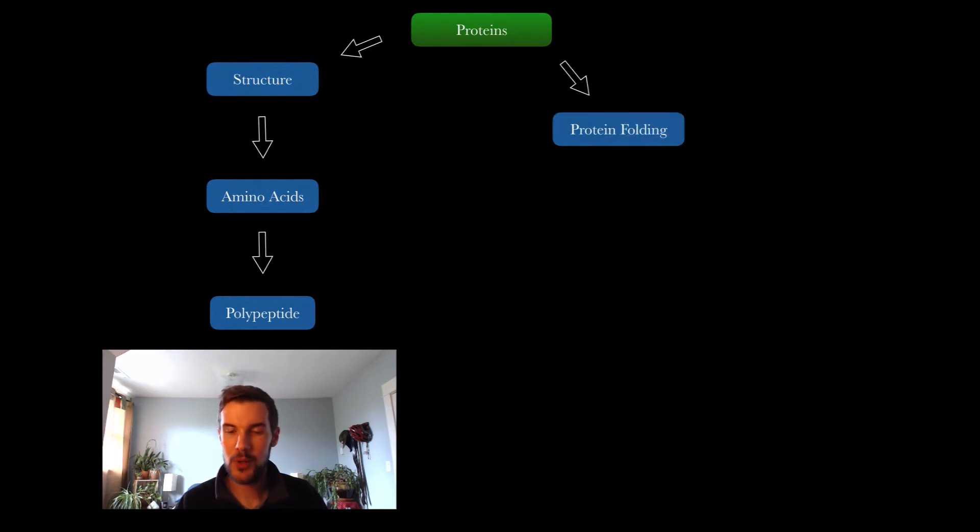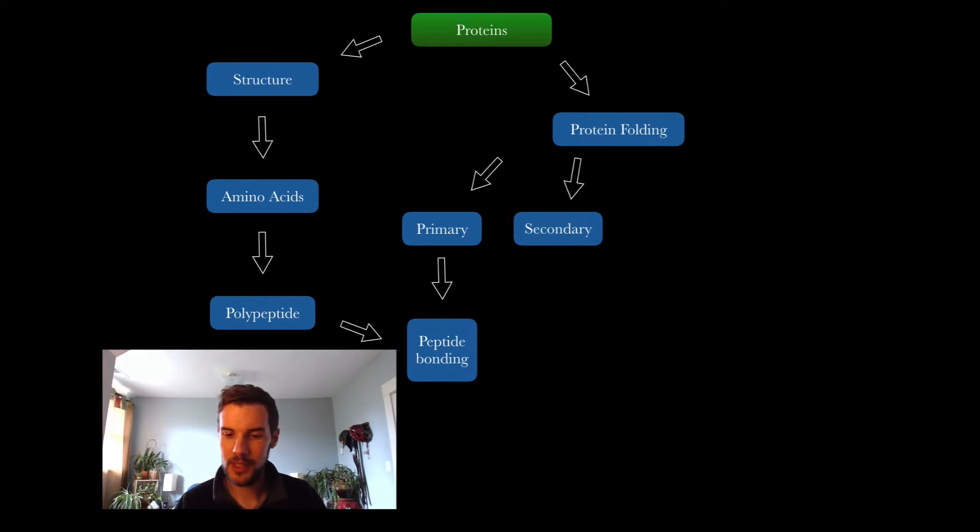Then we're going to talk about protein folding. There are four levels of protein folding. The primary level is the polypeptide which forms peptide bonds. The secondary folding structure forms helices, alpha helices and beta pleated sheets through hydrogen bonding.